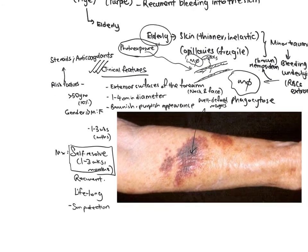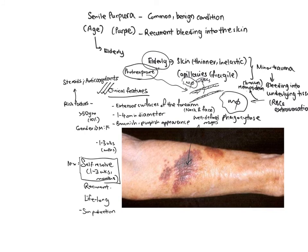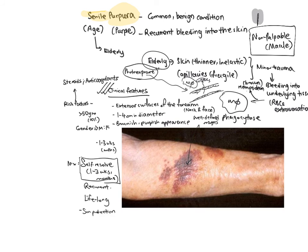In summary, senile purpura is a condition linked to aging. For purpura, it is basically a purple discoloration, and in this condition it is non-palpable — meaning it is not raised. We call it a macule, which means it's flat, and you cannot feel it when you run your fingers over the lesion. It is linked to recurrent bleeding into the skin. In elderly patients, the skin may be thinner and more inelastic, the capillaries are more fragile and can be damaged with minor trauma, leading to bleeding into underlying tissues, with red blood cells leaking out and macrophages trying to engulf them. Excessive sunlight can also lead to capillary damage.